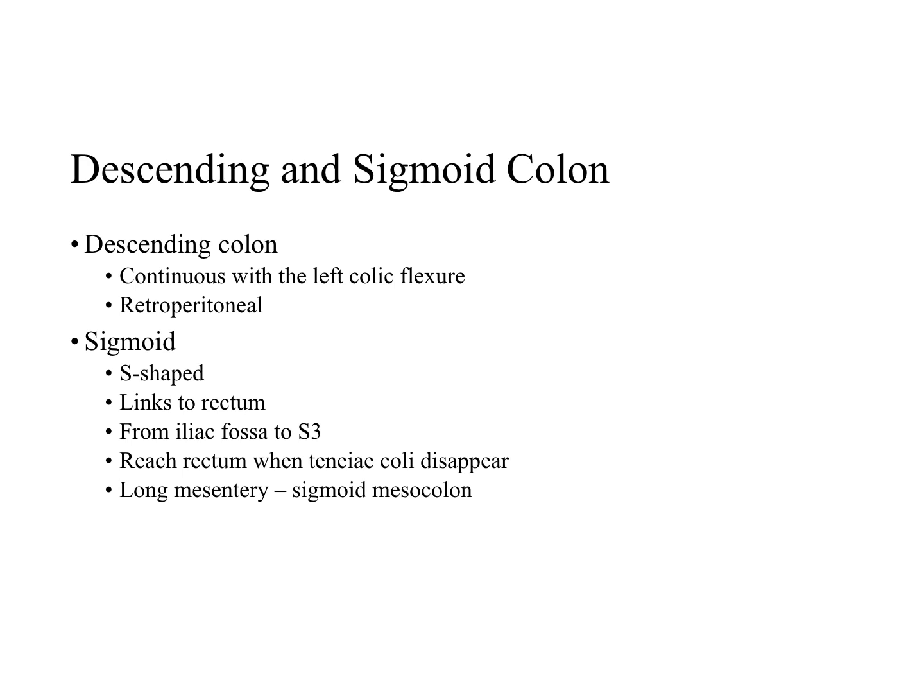The sigmoid colon is characterized by its S-shaped loop of variable length. It links the descending colon to the rectum, extending from the iliac fossa to the third sacral vertebra where it joins the rectum. The termination of the tenia coli muscle, which ends approximately 15 centimeters from the anus, indicates the junction between the rectum and the sigmoid colon. The sigmoid colon usually has a long mesentery called the sigmoid mesocolon and therefore has considerable freedom of movement. The left ureter and where the left common iliac divides both lie retroperitoneal, posterior to the apex of the root of the sigmoid mesocolon.